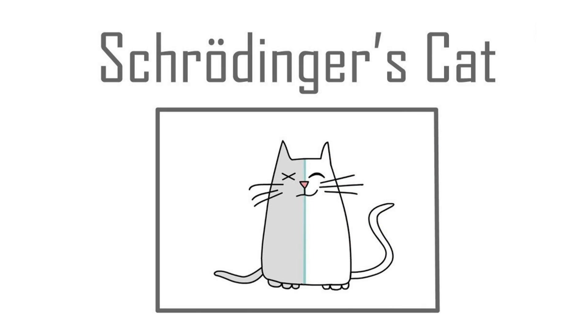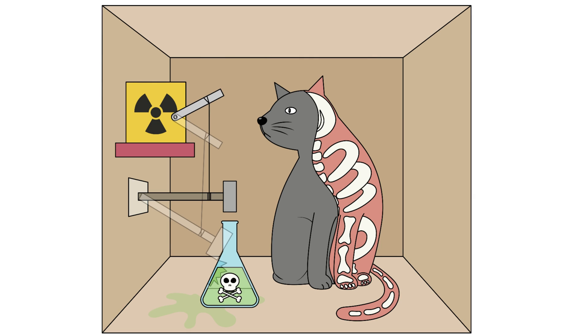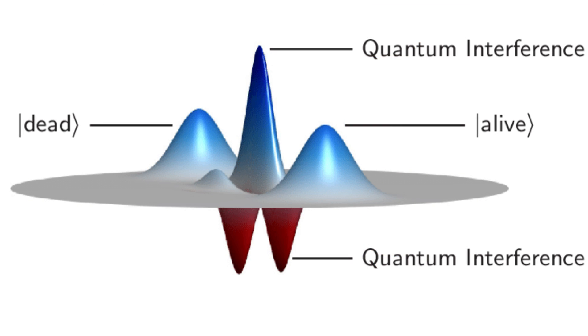To understand how qubits work, let's take the famous thought experiment called Schrödinger's Cat. Imagine a cat in a closed box with a radioactive substance that has a 50% chance of decaying and releasing a deadly gas that could kill the cat. According to classical physics, until we open the box and observe the cat, the cat is both alive and dead at the same time.